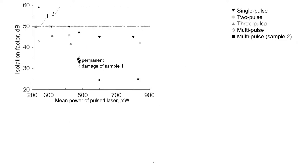Here we show a summary of experimental results for two tested samples. The first sample was tested in all four pulsed laser regimes and was irreversibly destroyed, while the second sample was tested in multi-pulse regime only. The minimum achieved isolation coefficient was 24.7 dB, while the device specification guaranteed 59.1 dB.